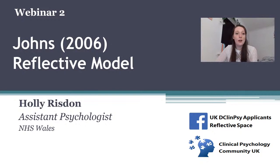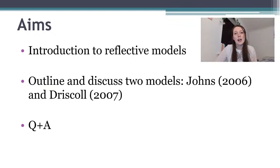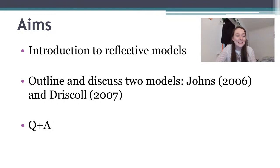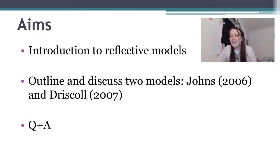Okay, let's make a start. You're logging in today to find out about the Johns 2006 reflective model, and we're also going to discuss the Driscoll 2007 model. Our aims today are an introduction to reflective models — a little bit of an extension from last month's webinar where we talked about reflective practice in clinical psychology. I'll outline and discuss those two models, the Johns and the Driscoll, two of the most popular models out there. I'm also going to give some examples of when I've used those models, and I had a great volunteer, Jodie, who had a discussion with me last week about the pros and cons of the Johns model.